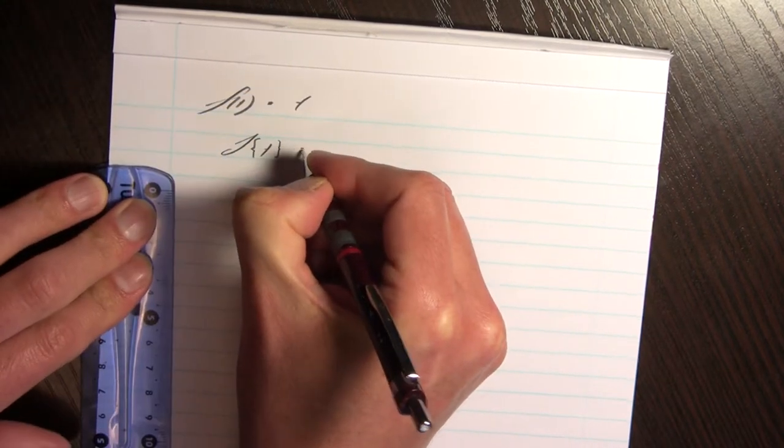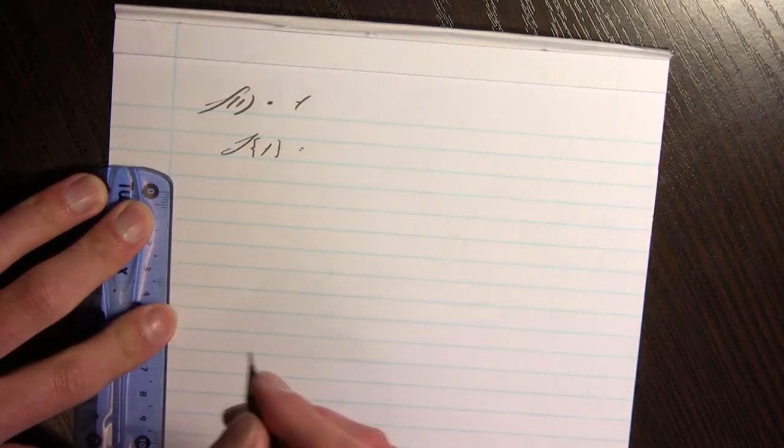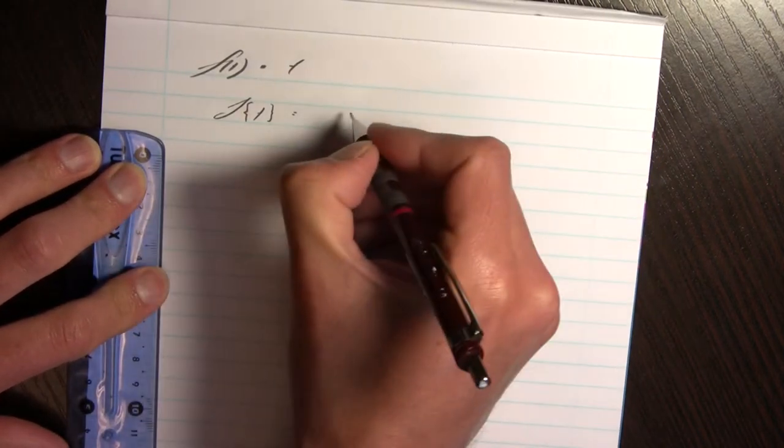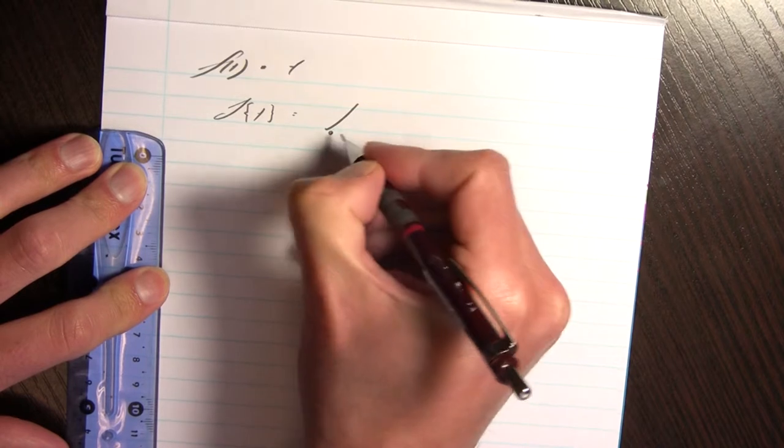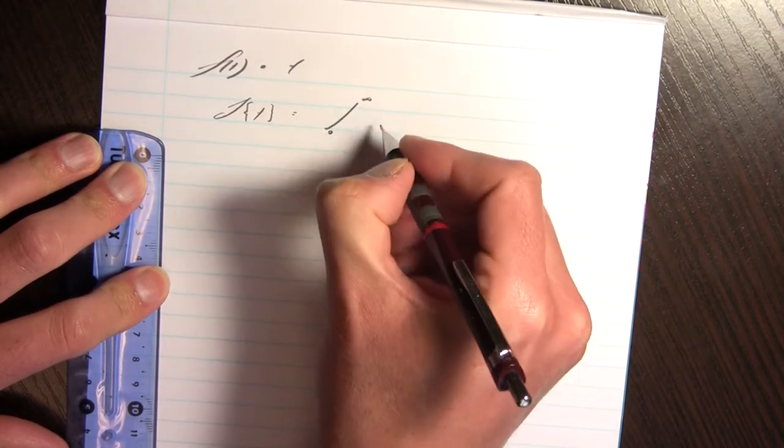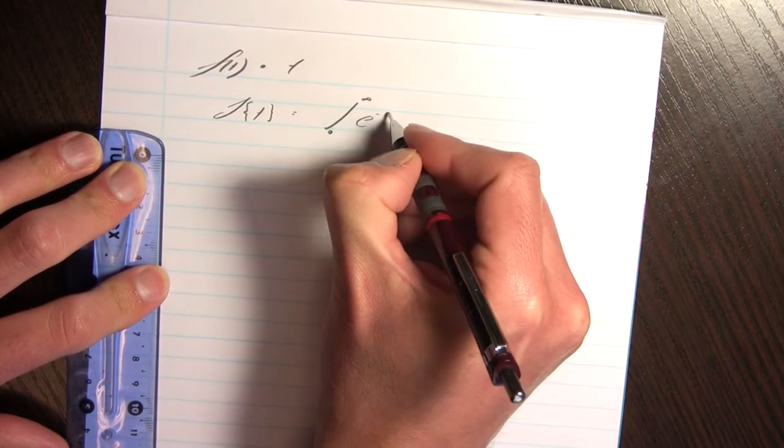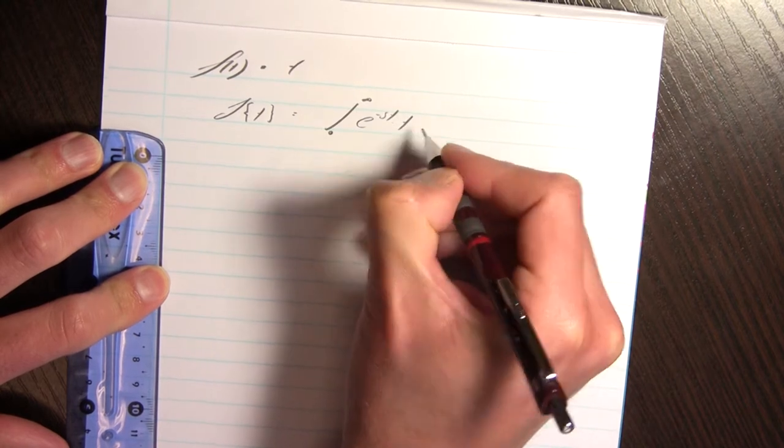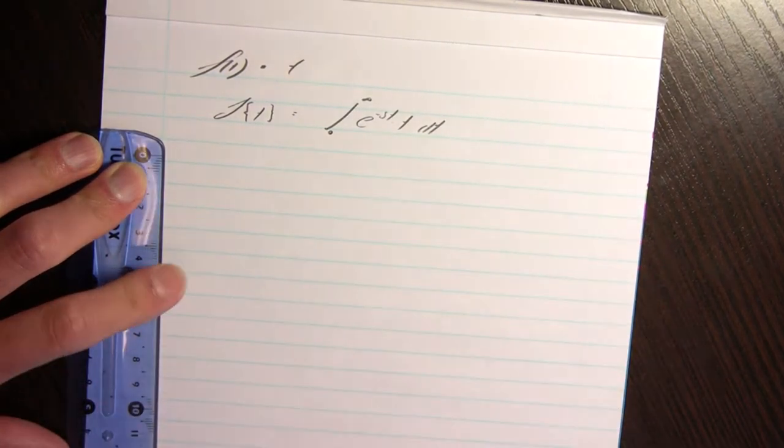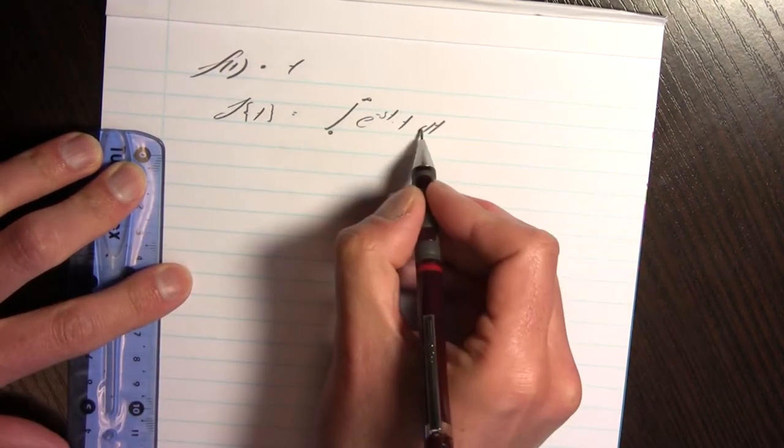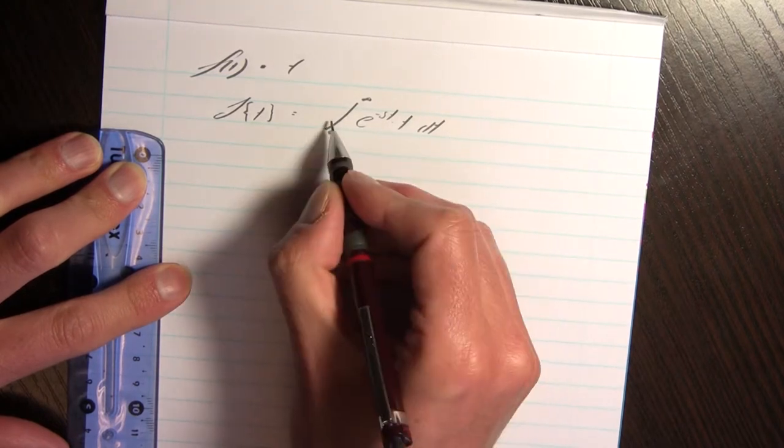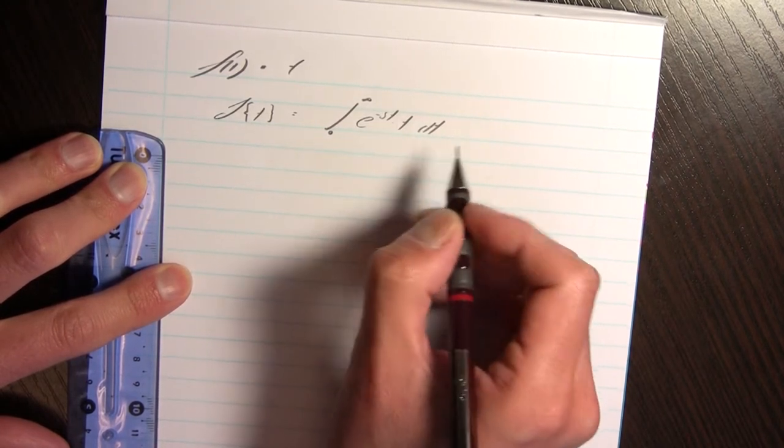Now we do have our shorthand of doing that. That is going to be the improper integral going from 0 to infinity of e to the power negative st times t dt. So here I have the product of two functions of t and I'm taking the integral with respect to that variable.